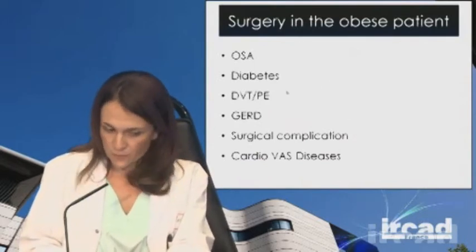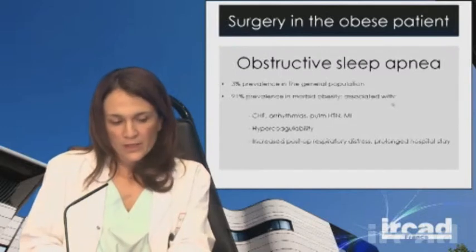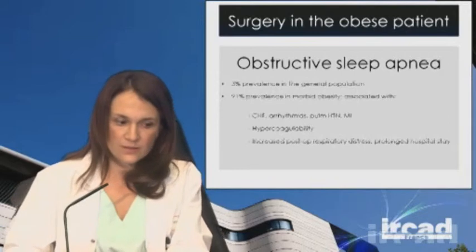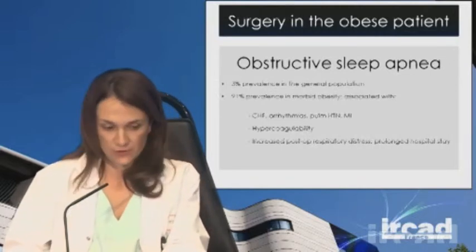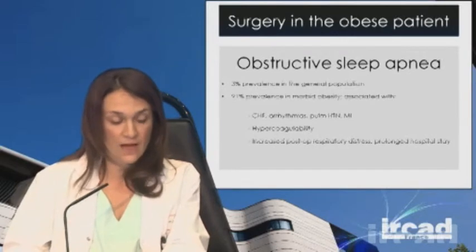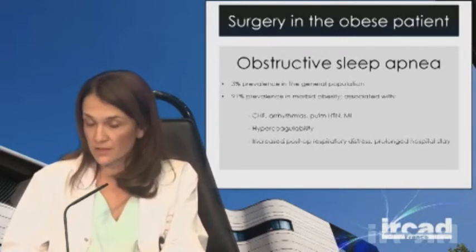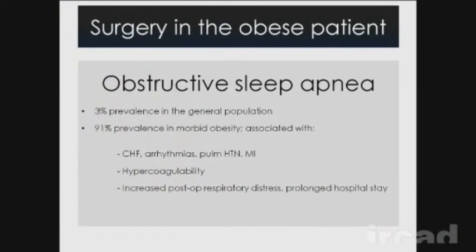One comorbid condition must be looked at very carefully: obstructive sleep apnea. It has a 3% prevalence in the general population but a 91% prevalence in the morbidly obese population. It is associated with cardiac problems, arrhythmias, infarction, hypercoagulability, increased postoperative respiratory distress, and prolonged hospital stay. If you suspect sleep apnea before any elective surgery, that patient needs to be studied. If they need a CPAP mask to breathe, address it before surgery and have the patient bring that mask with them.